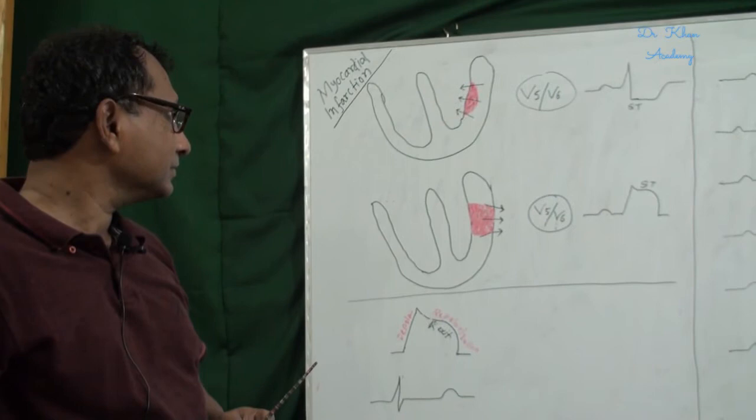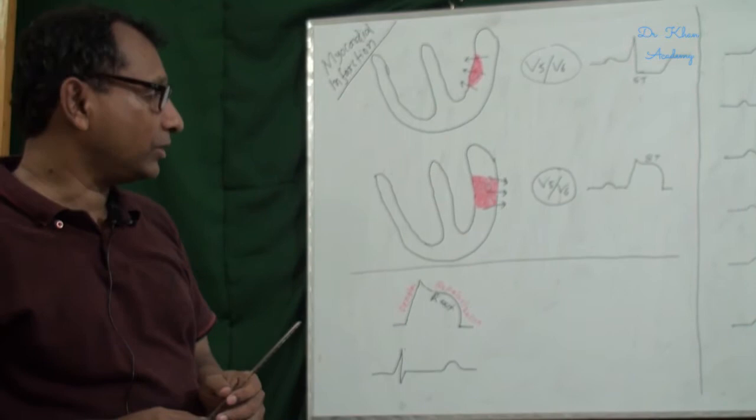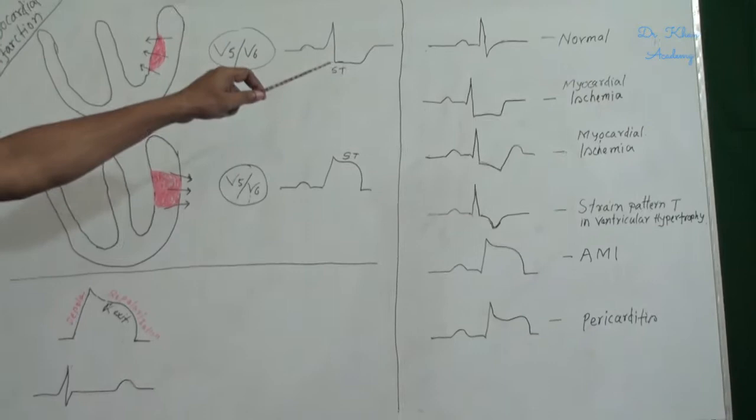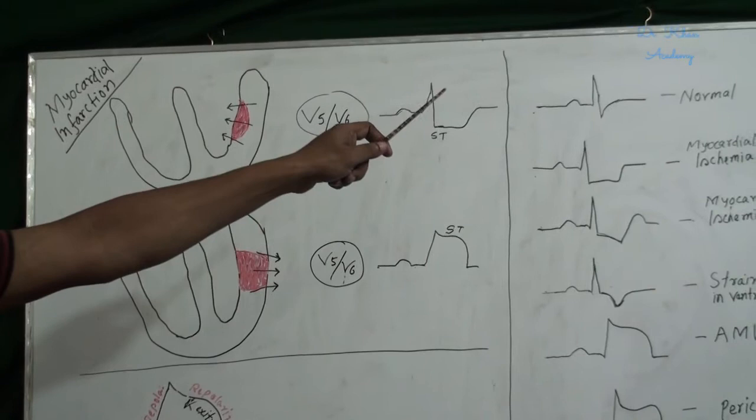Now I am going to discuss the different shapes of the ST segment elevations or depressions. These figures, first figure shows ST depressions but upward sloping ST depression that is found in normal condition. And second figure shows plane ST segment depressions that indicates myocardial ischemia.